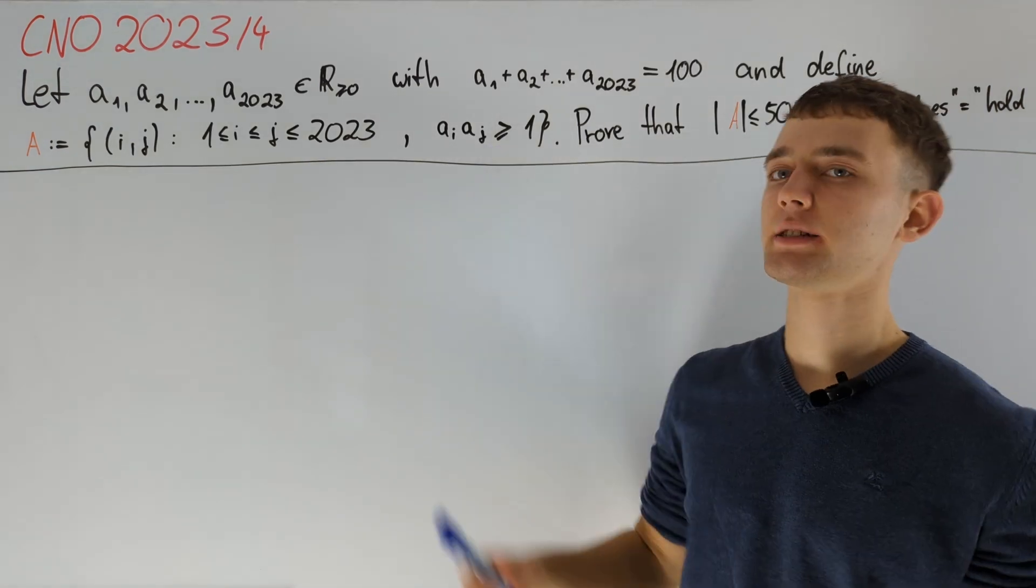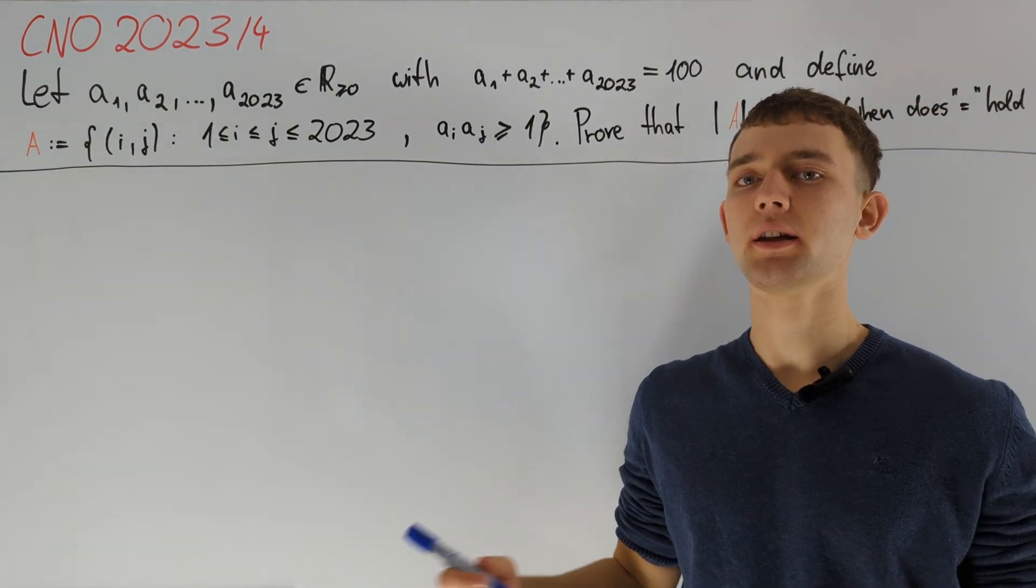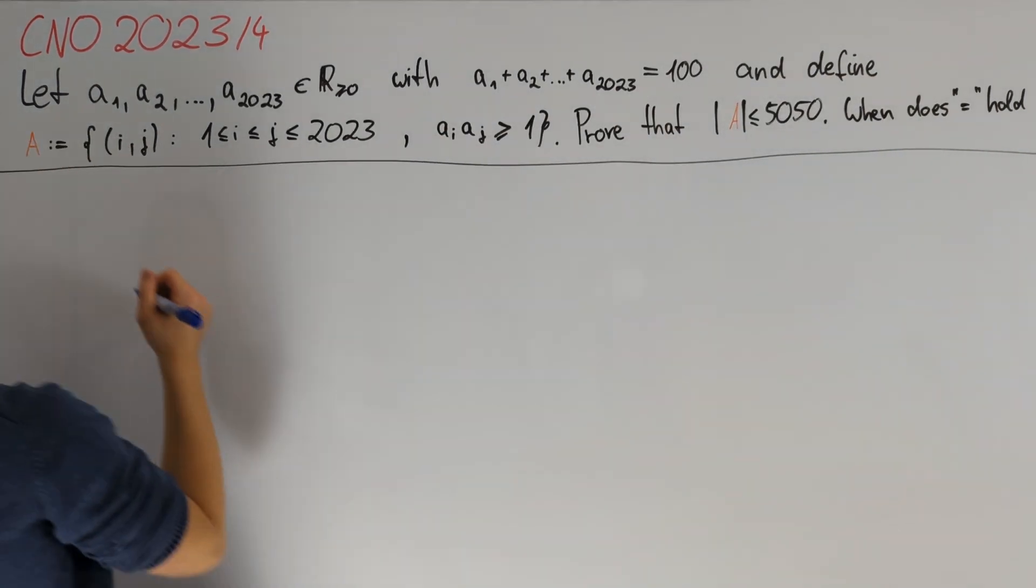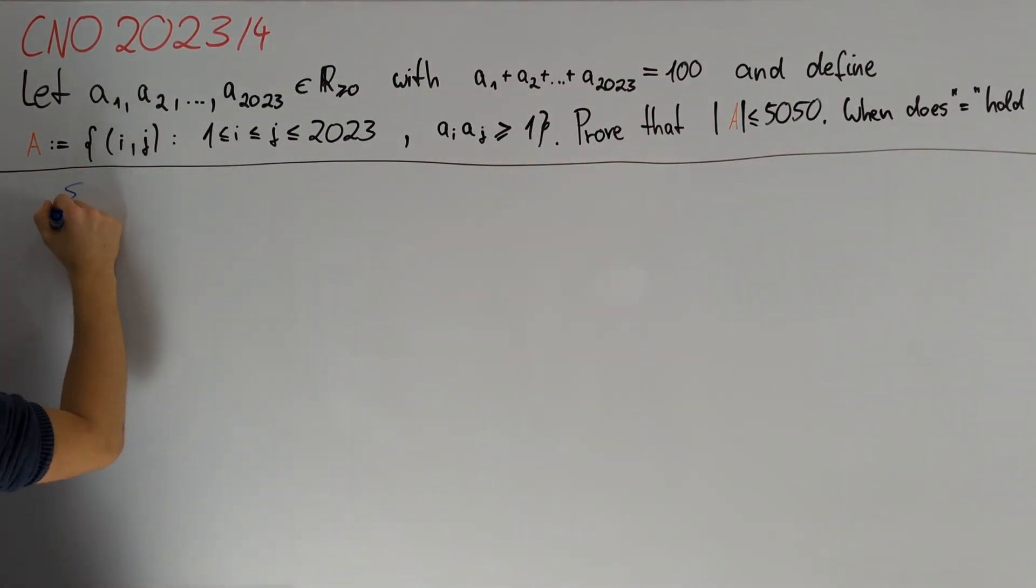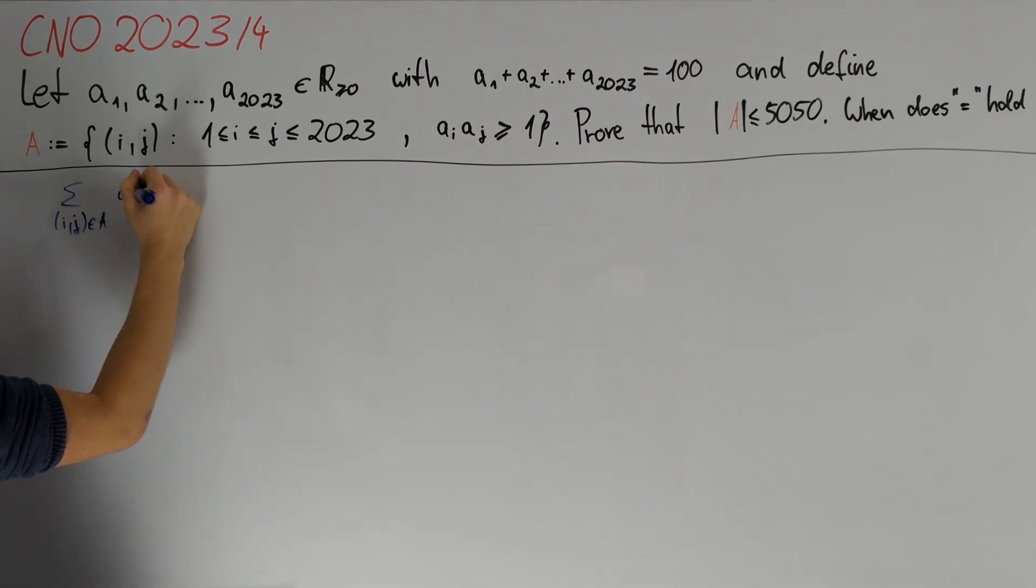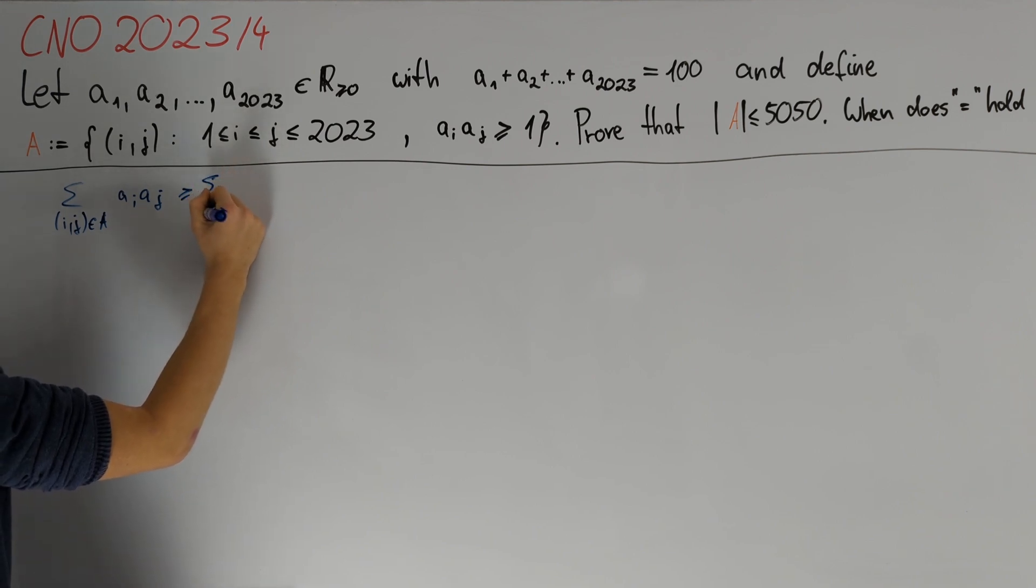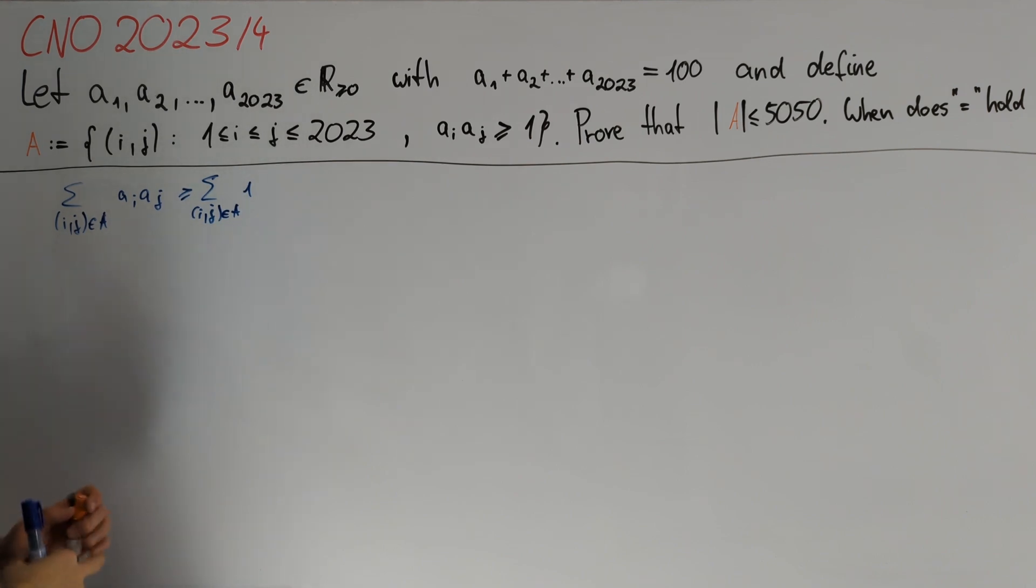This size condition gives us an immediate way to bound the number of elements of A from above. Namely, we know that the sum over all i,j in A of a_i*a_j is greater than or equal to the same sum of 1. But this is by definition nothing but the cardinality of A, and therefore if we could show that this sum would be less than or equal to 5050 then we would be done.